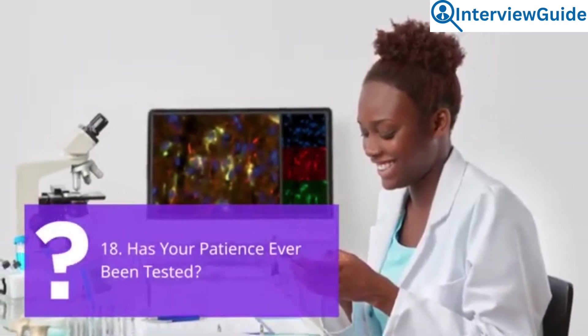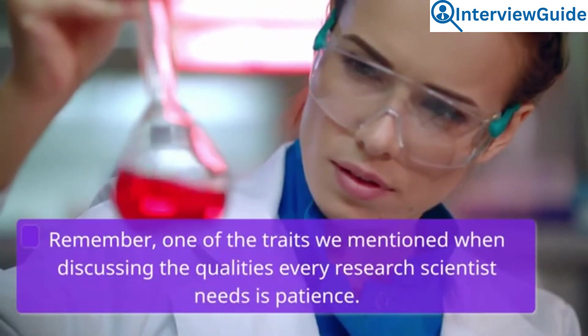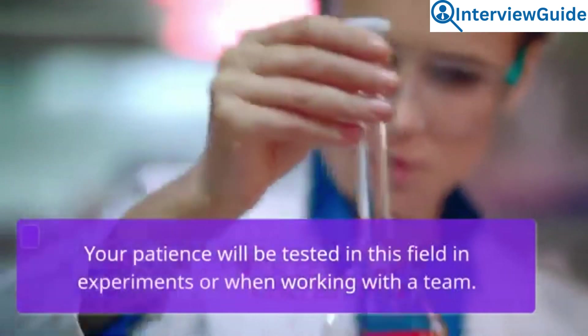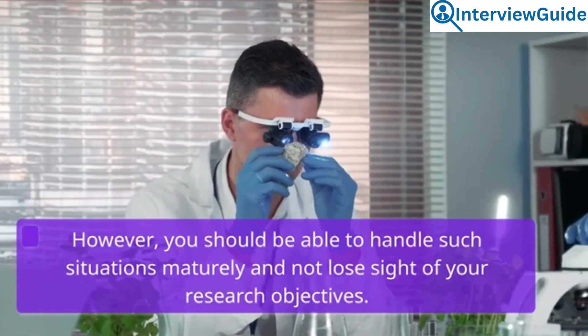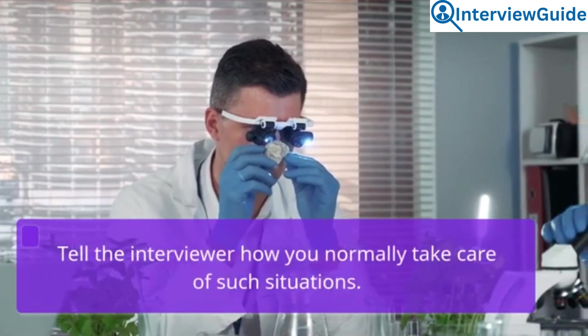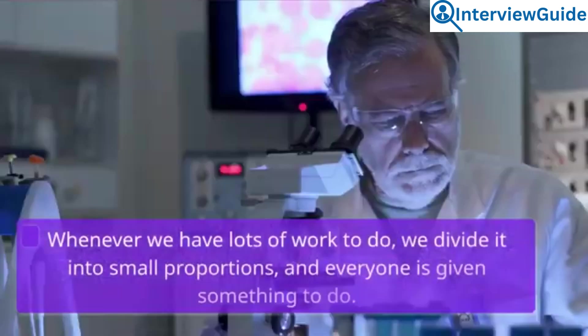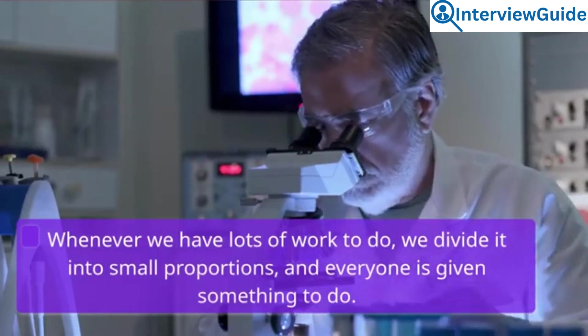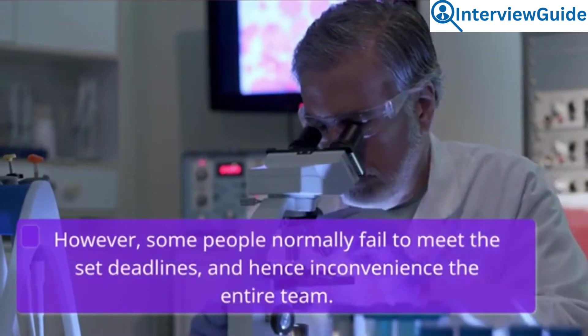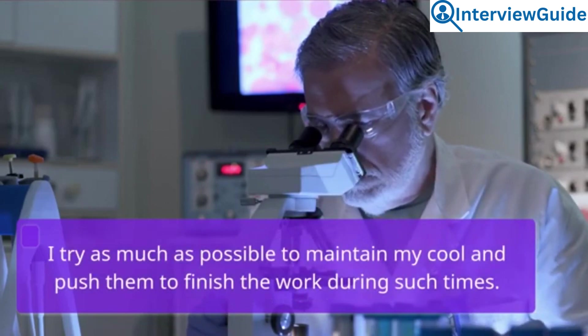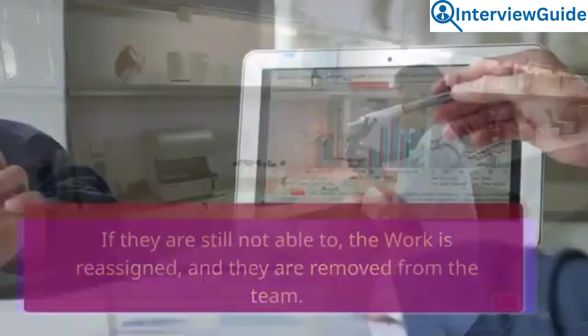Question 18: Has your patience ever been tested? Remember, one of the traits we mention when discussing the qualities every research scientist needs is patience. Your patience will be tested in this field in experiments or when working with a team. However, you should be able to handle such situations maturely and not lose sight of your research objectives. Tell the interviewer how you normally take care of such situations. Sample answer: My patience has mainly been tested in group settings. Whenever we have lots of work to do, we divide it into small proportions, and everyone is given something to do. However, some people normally fail to meet the set deadlines, and hence inconvenience the entire team. I try as much as possible to maintain my cool and push them to finish the work during such times. If they are still not able to, the work is reassigned, and they are removed from the team.